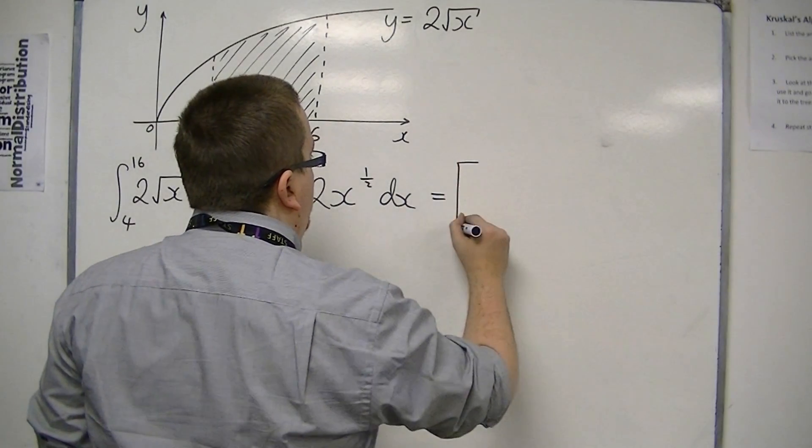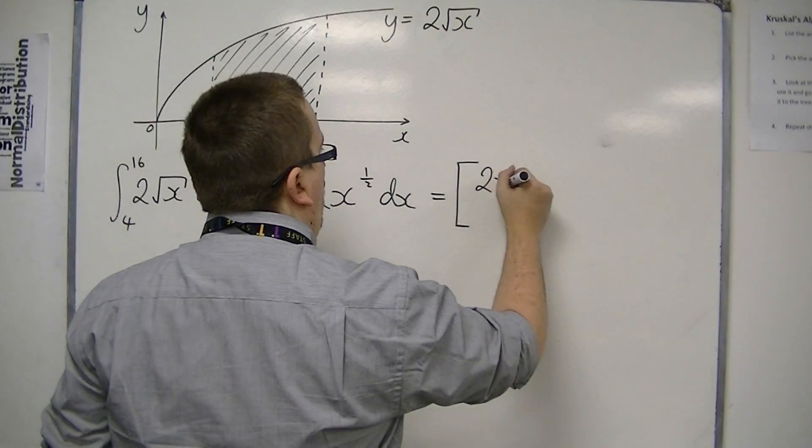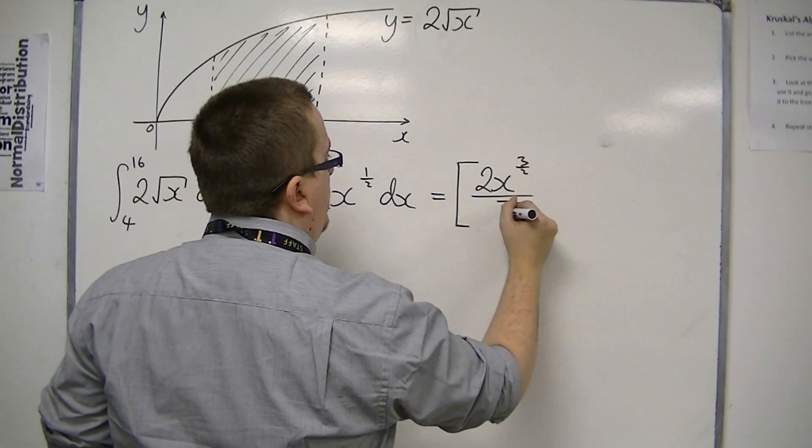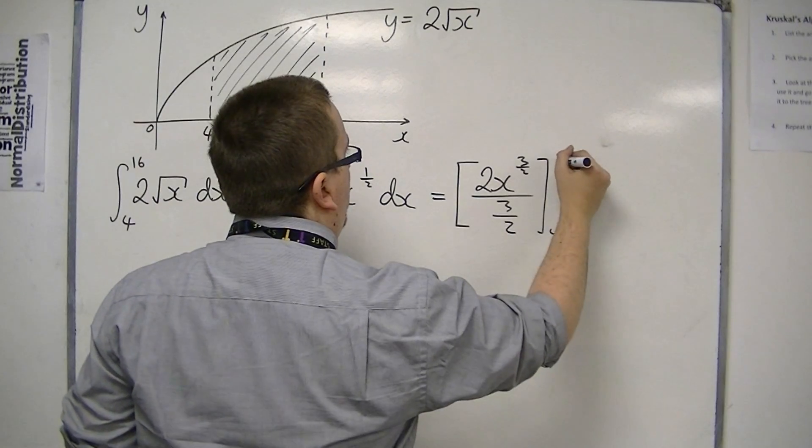Now I'm going to integrate it. I add 1 to the power, so 1 half plus 1 is 3 halves. Divide by the new power, and I'm going to evaluate this between 4 and 16.